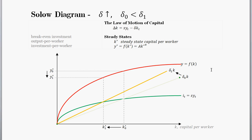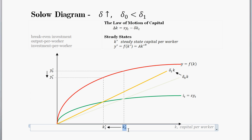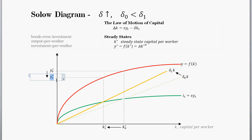We have an increase in depreciation. We started off with delta sub 0 and went up to delta sub 1, where delta sub 0 is less than delta sub 1. The increase in the depreciation rate increases the slope of that break-even investment line. Where before we had a steady state value k* sub 0, we now have a new intercept k* sub 1. Given that depreciation has increased, the steady state value of capital per worker has decreased. Output per worker is just total factor productivity times the steady state value of capital raised to alpha, giving us y* sub 1.